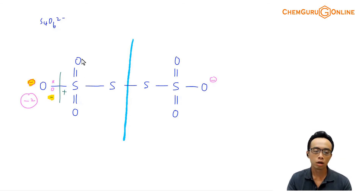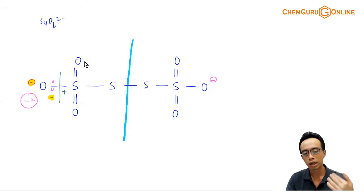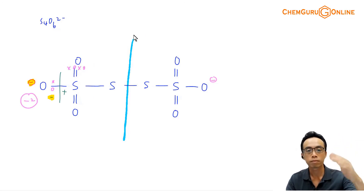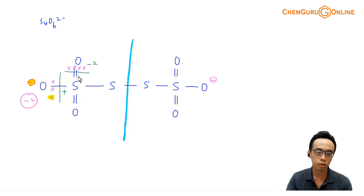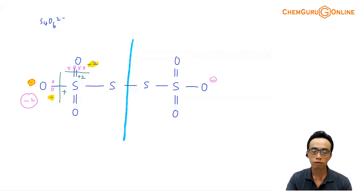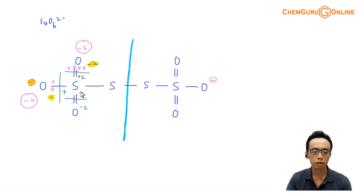Now for the S=O double bond: there are 4 electrons total. The electron pairs are closer to oxygen because oxygen is more electronegative. If we break this double bond, all electrons go to oxygen, so oxygen gains 2 electrons giving it a charge of minus 2, and sulfur loses 2 electrons giving it plus 2. The oxidation state of this oxygen is still minus 2. Both S=O double bonds behave identically: breaking each one gives oxygen minus 2 and contributes plus 2 to sulfur.